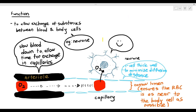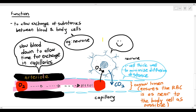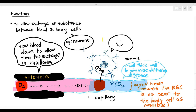So the thin wall and the narrow lumen minimize the diffusion distance so that exchange can happen between the body cells and the blood. The red blood cell provides oxygen to the body cells, and the body cells provide carbon dioxide back to the blood. That is why blood going to the body cells is oxygenated, and blood going away from the body cells becomes deoxygenated. The capillaries have a one-cell thick wall to minimize diffusion distance, and the narrow lumen ensures the red blood cell is as near to the body cell as possible so that diffusion can easily happen.